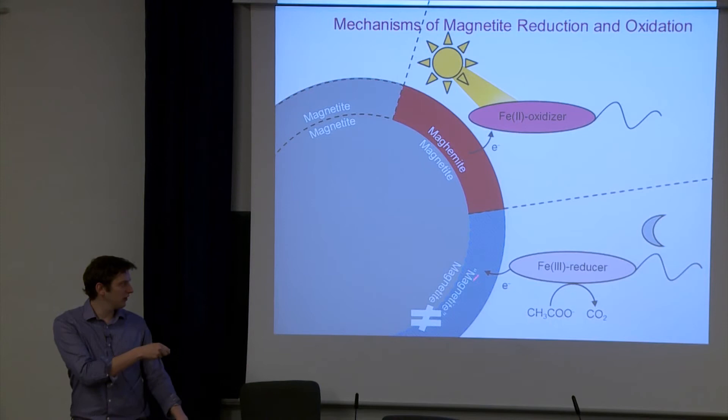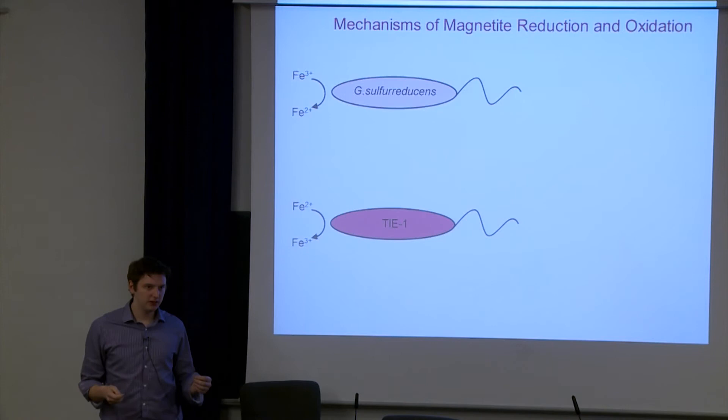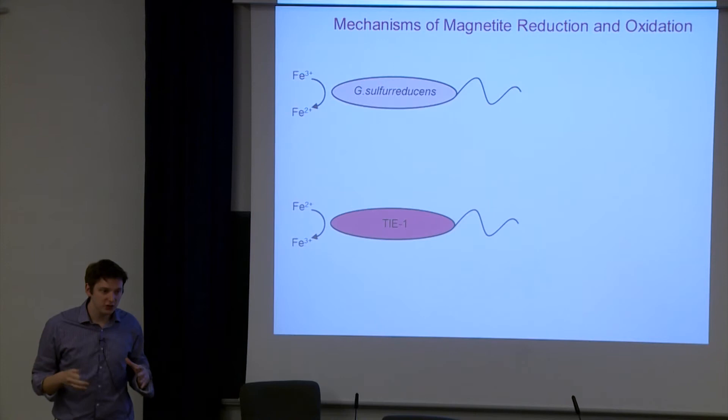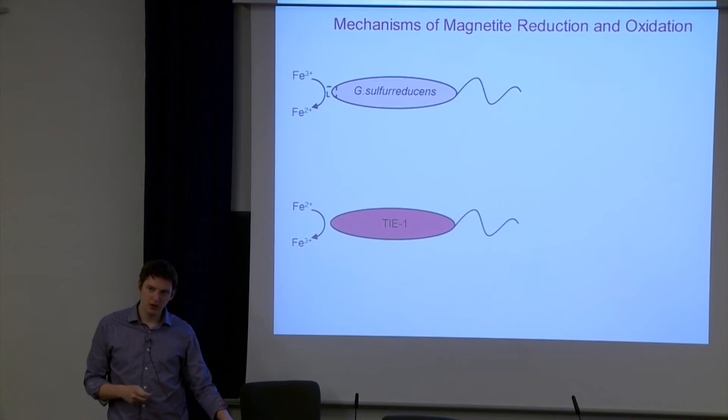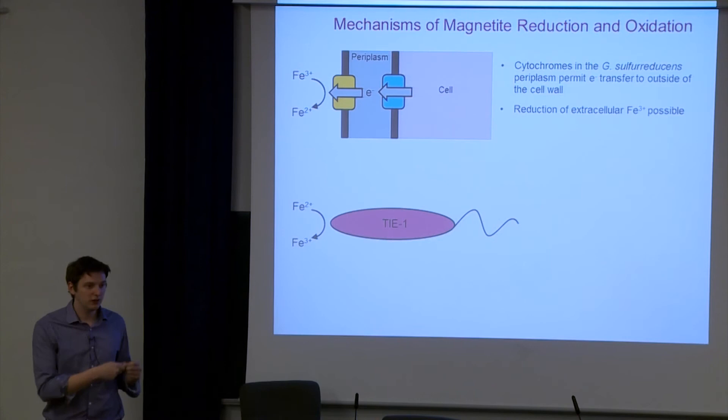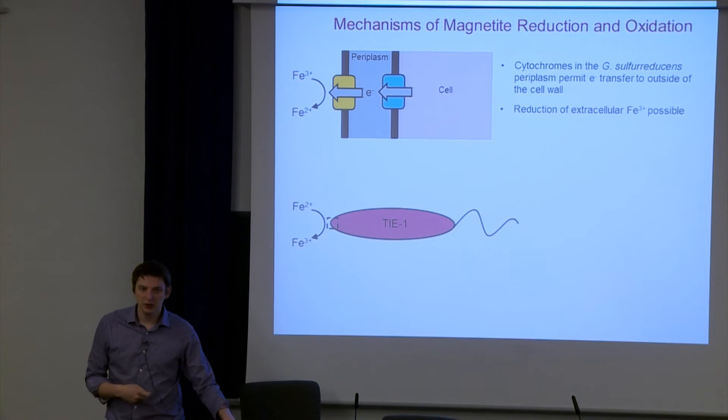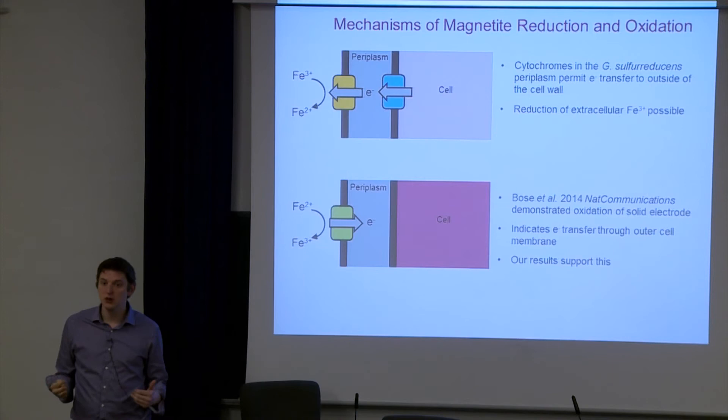One reason this is quite useful or important is because iron metabolizing bacteria, in order to oxidize or reduce the magnetite, there needs to be some direct contact between the mineral itself and the bacteria, because we don't have any electron donors added in here. This has been known for Geobacter for some time, that cytochromes present in the cell wall in fact permit the transfer of electrons across the periplasm. This can then in turn reduce the iron 3. With TIE-1, it was a little bit unclear, although a recent paper that came out just this year has demonstrated that TIE-1 is able to oxidize solid electrodes. That would support the idea that we could oxidize solid surface such as magnetite. They have some sort of cytochromes or analogues to cytochromes that permit this.